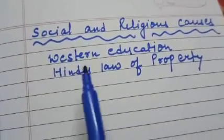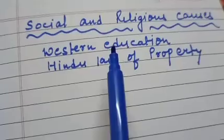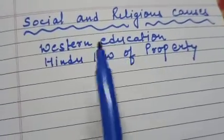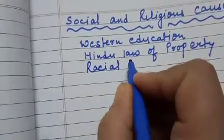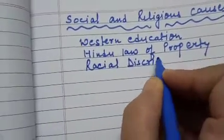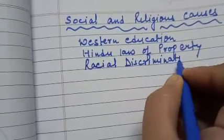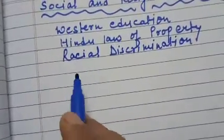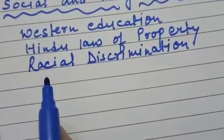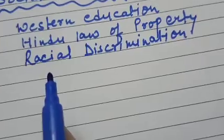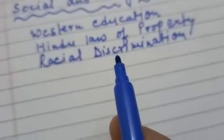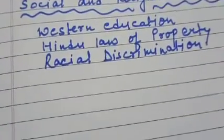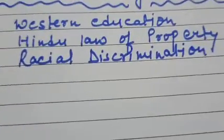Conservative Indians were alarmed by the rapid spread of Western culture and English education in India. Moreover, the British looked down upon Indians and followed a policy of racial discrimination. Britishers considered themselves superior because of their skin color — as they were fair, they thought themselves superior, while we Indians were considered inferior.